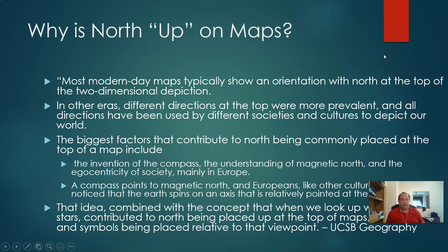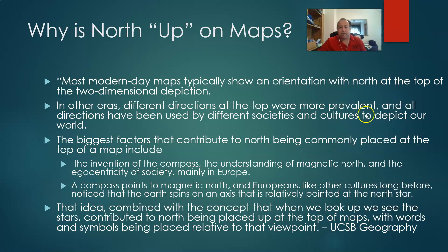One thing that's important to understand is: why is north up on maps? I found this article from UCSB Geography. Most modern day maps show an orientation with north at the top. In other areas, different directions were more prevalent, and all directions have been used by different societies. When it comes to north being commonly placed at the top, the big factors are the invention of the compass, the understanding of magnetic north, and the egocentricity of society, mainly in Europe.